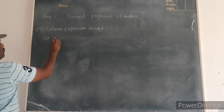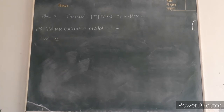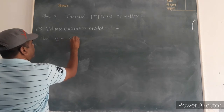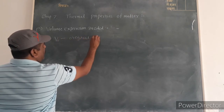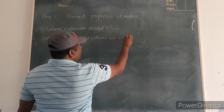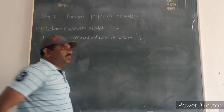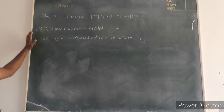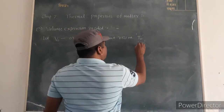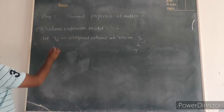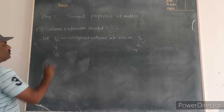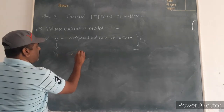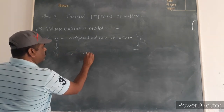Let V0 be the original volume of the given body at room temperature T0. Now if we heat the body, its temperature increases from T0 to T, and the volume also increases from V0 to Vt. The increase in temperature is T minus T0, which equals delta T.